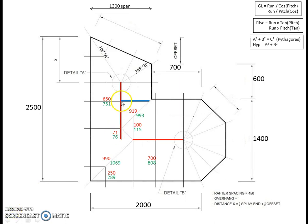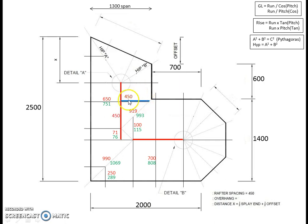Now we'll work out this common rafter on this side — it turns out to be very easy, and we've already worked out some of the figures for it. From this point to that point, this distance is actually our maximum rafter spacing: a full 450 from there to there. Which means if it's 450 that way, it's 450 that way, giving us a run of 450. Using the GL formula gives a geometric length of 520. Pause the video and run that through your calculator to make sure you're still getting the correct answers.